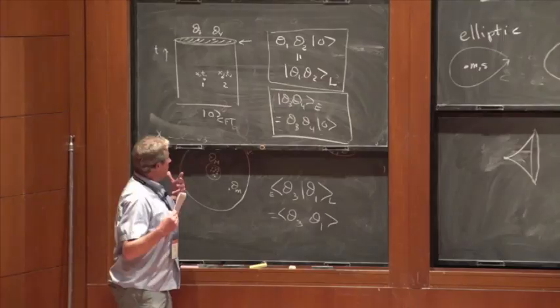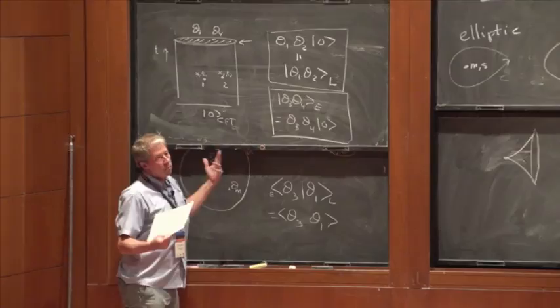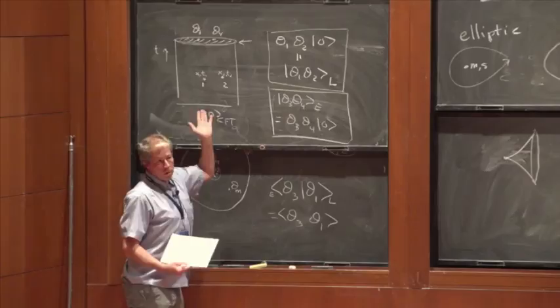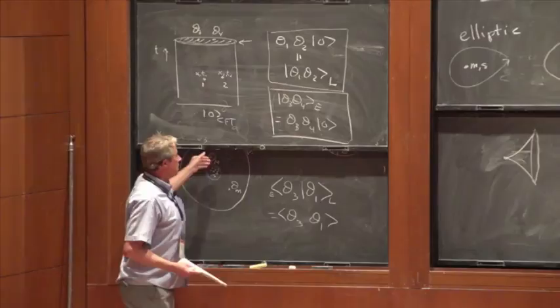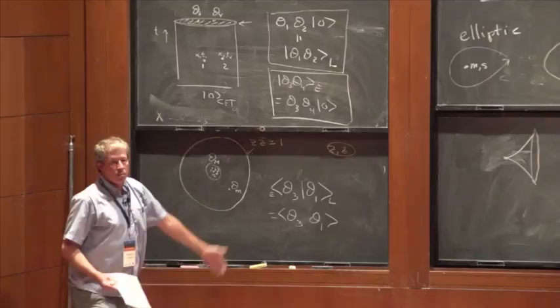So the prescription that a bulk operator can be expressed in terms of boundary operators is here: the Euclidean state I've defined by the Euclidean CFT has an overlap with the Lorentzian state, given by the bulk-boundary propagator. The two Hilbert spaces are not independent — they are the same Hilbert space. That's why I'm able to represent the internal Hilbert space in terms of the boundary Hilbert space. Doing the Euclidean section allows me to start talking about properties of the state at a given time slice.